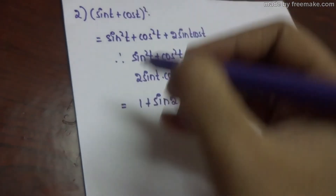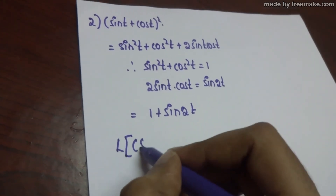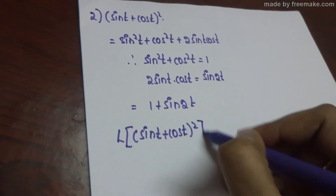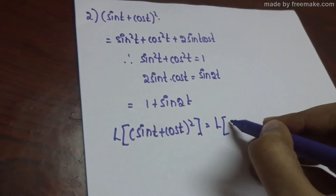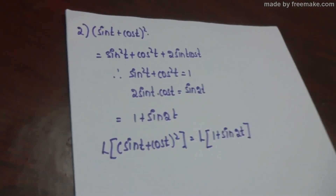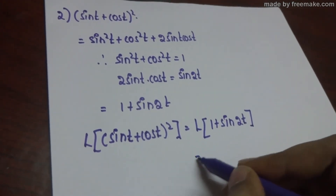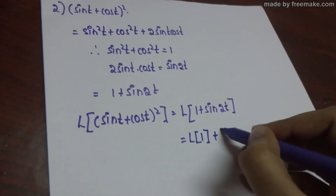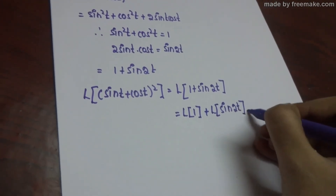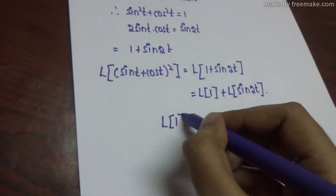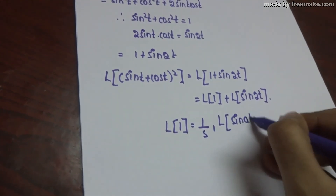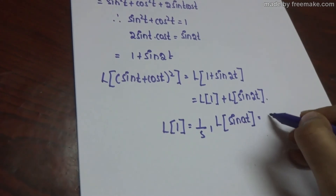Now apply Laplace to the function. The Laplace of sin t plus cos t whole square equals Laplace of 1 plus sin 2t. Applying Laplace to each function separately: Laplace of 1 plus Laplace of sin 2t. Here Laplace of 1 is equal to 1 by s. The Laplace of sin at formula is a by s square plus a square.